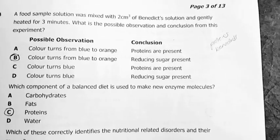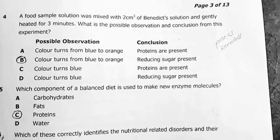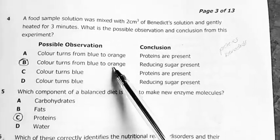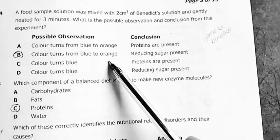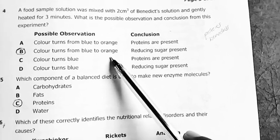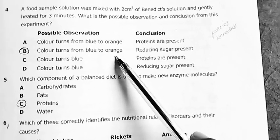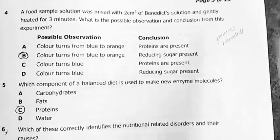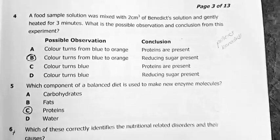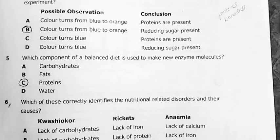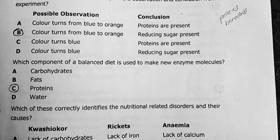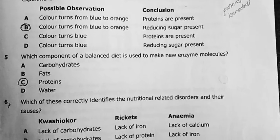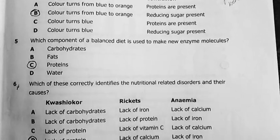This blue color is brought about by copper 2 ions. When they are reduced to copper 1 ions, the appearance changes to orange. Remember, in chemistry, transition elements form colored compounds. So when they are in the form of copper 2, they are blue. When they are in the form of copper 1, they become orange. So the answer there is B. The next question is, which component of a balanced diet is used to make new enzyme molecules? Remember, enzymes are protein in nature. So the answer is C, proteins.